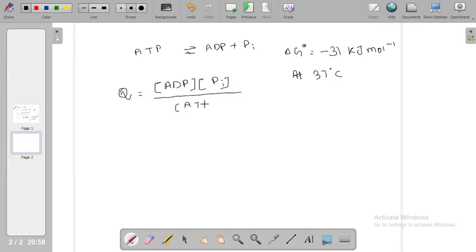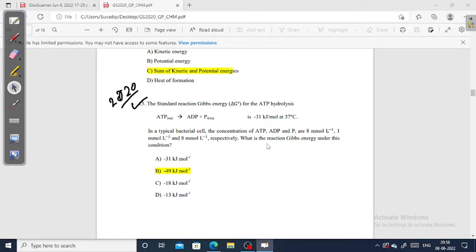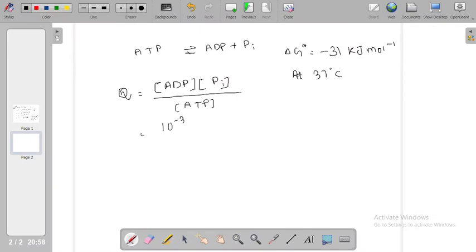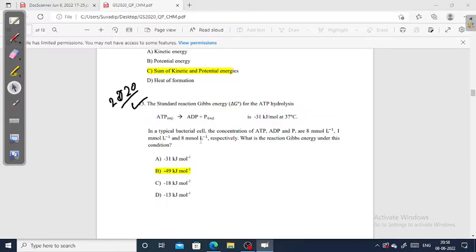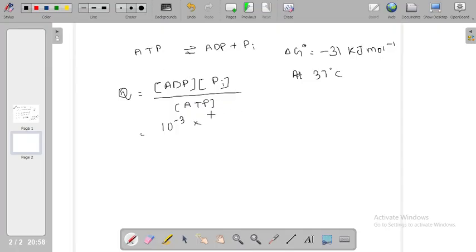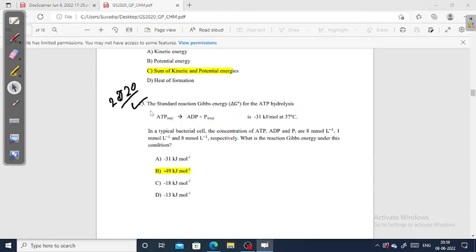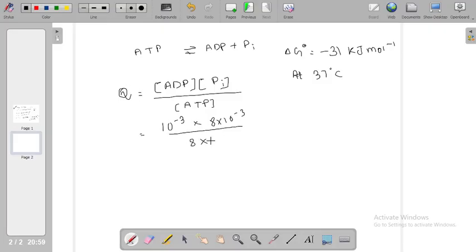The reaction quotient Q equals concentration of ADP times concentration of phosphate divided by concentration of ATP. The concentration of ADP is 1 millimolar or 10^-3 molar. The phosphate is 8 millimolar, which is 8 × 10^-3 molar.